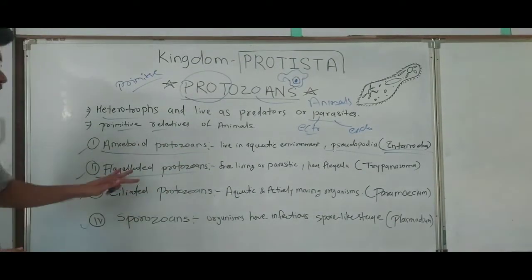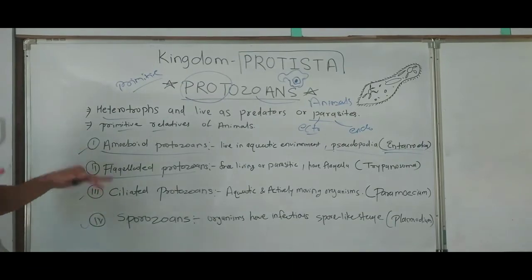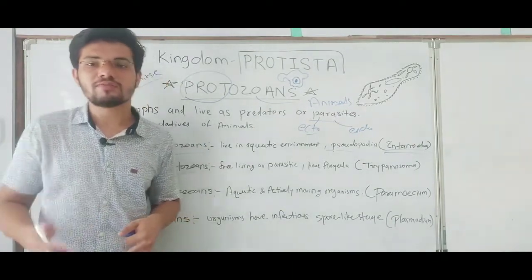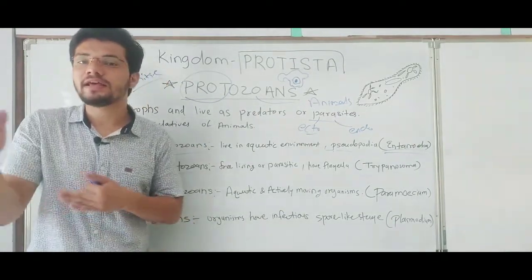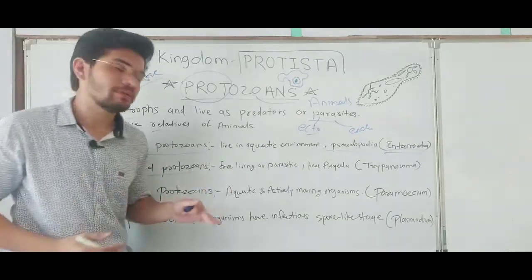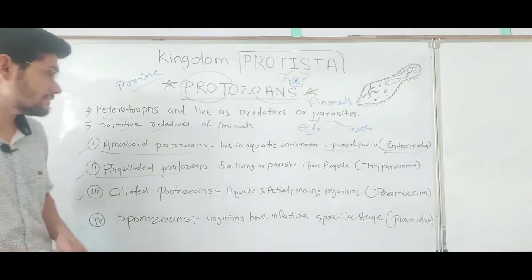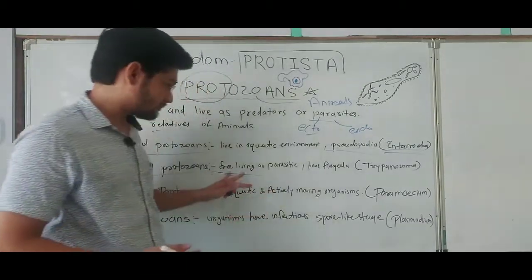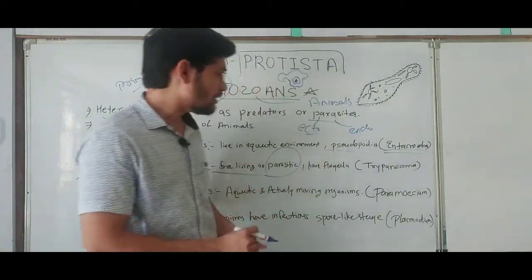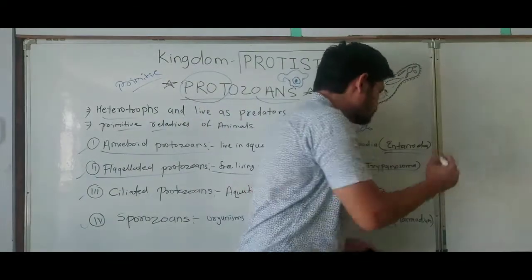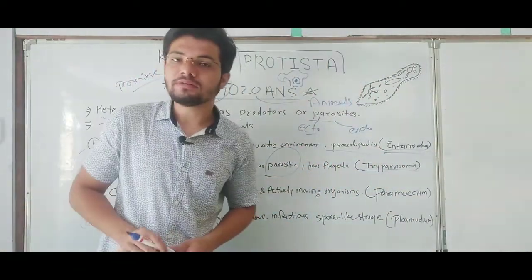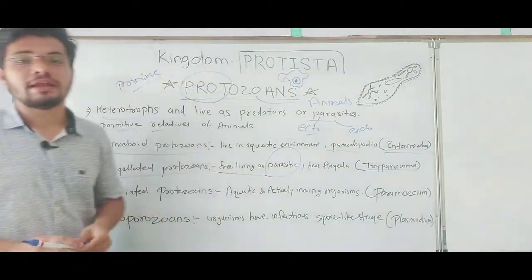The second group is flagellated protozoans. As the name suggests, they contain flagella — a hair-like structure used for movement from one place to another. They can be free-living or parasitic. An example is Trypanosoma, which is a parasitic organism that causes diseases like sleeping sickness.